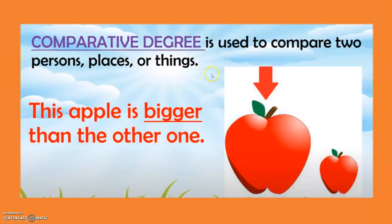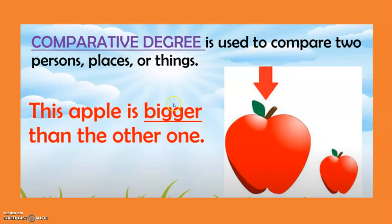When I say comparative degree, it is used to compare two persons, places or things. There is a comparison. So when I say — there are two apples here — this apple is bigger than the other. The spelling is also changing: big becomes bigger, double-G-E-R. And the word 'than' — always remember in comparative we have the word 'than' because you are comparing between two things.